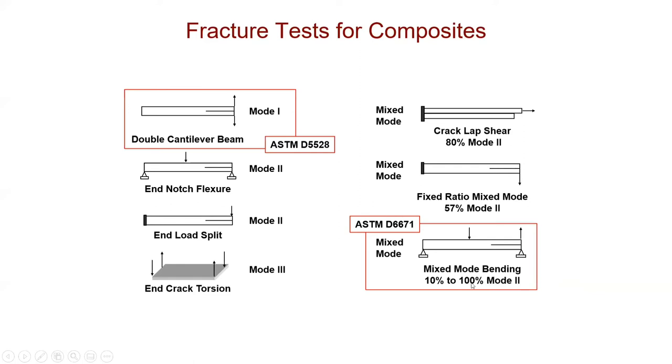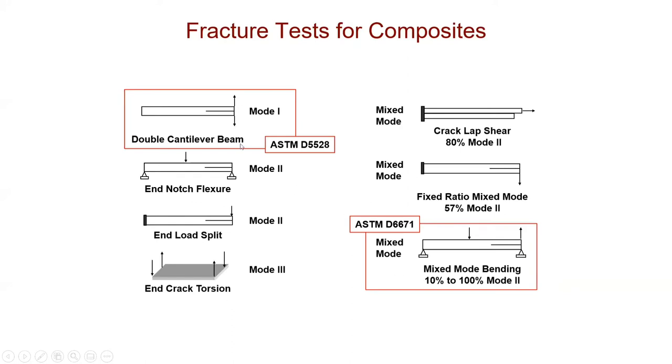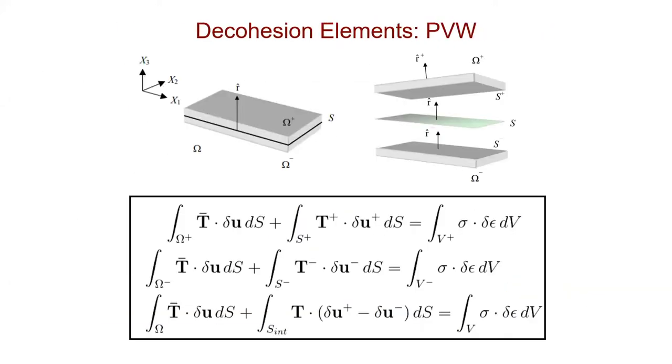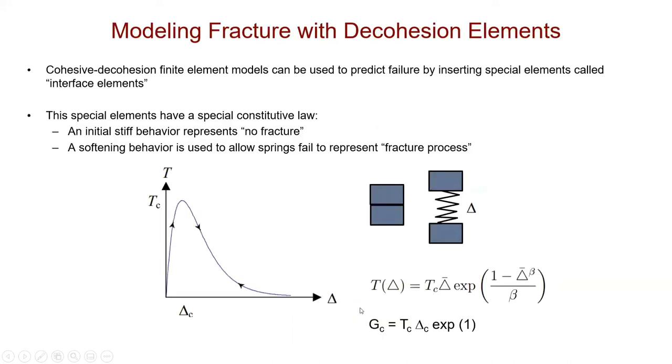These two tests are very widely used, and that's what informs G1C, G2C and those values. Very important tests that need to be performed. Now that I've given you a little intro on cohesive elements, which are basically nonlinear springs that connect the top surfaces with the bottom surface, and those nonlinear springs follow a constitutive law where it has very high stiff behavior at the beginning to simulate infinitely bonded surfaces, and then simulates a softening response which simulates the fracture process with the energy corresponding to critical energy release rate.